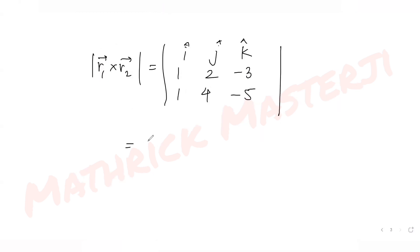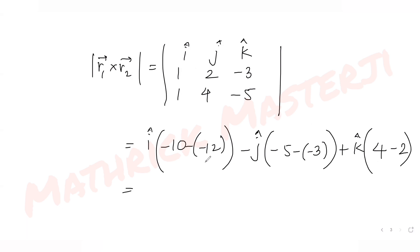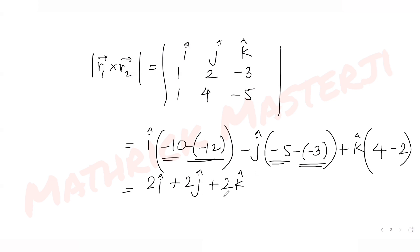Solving the determinant: the i component is (2×(−5) − (−3)×4) = −10 + 12 = 2. The j component is −((1×(−5)) − (−3)×1) = −(−5 + 3) = 2. The k component is (1×4 − 2×1) = 4 − 2 = 2. So r1 × r2 = 2i + 2j + 2k.